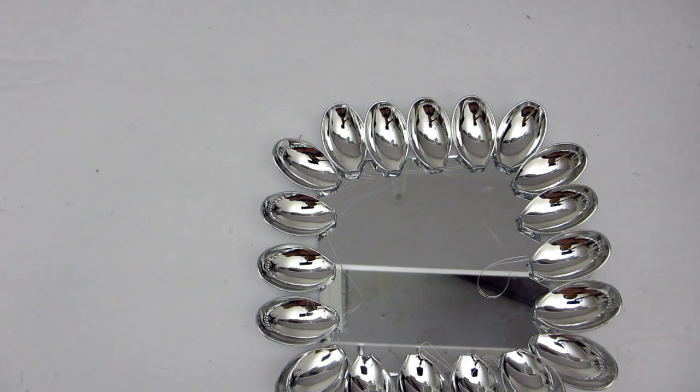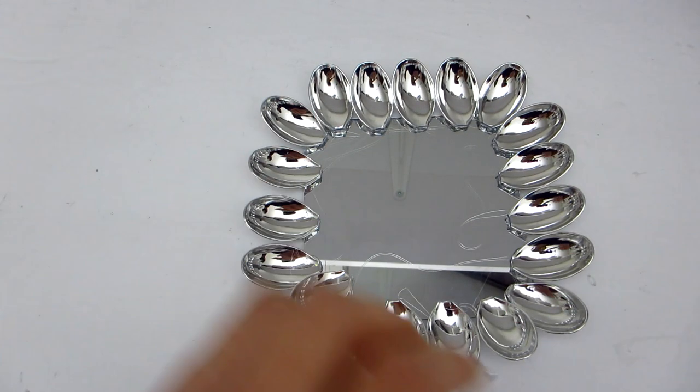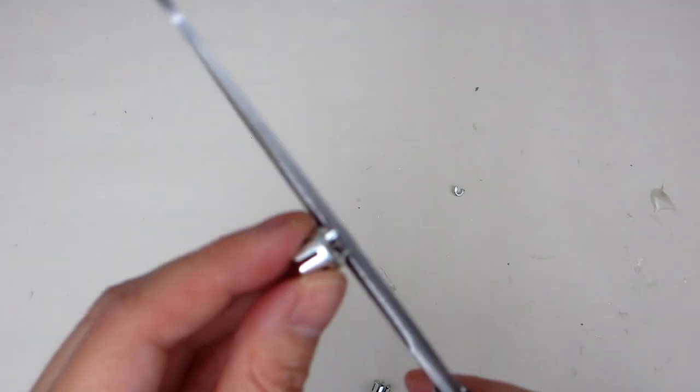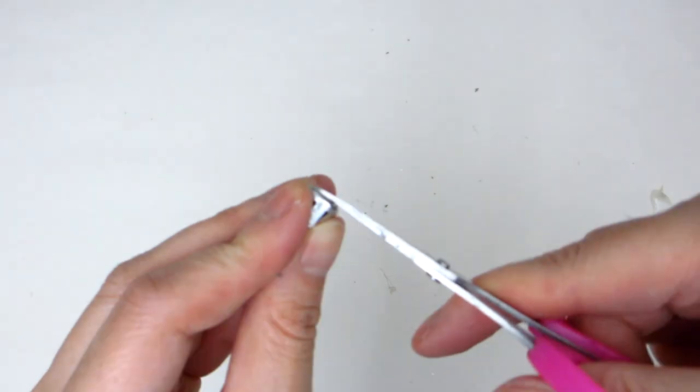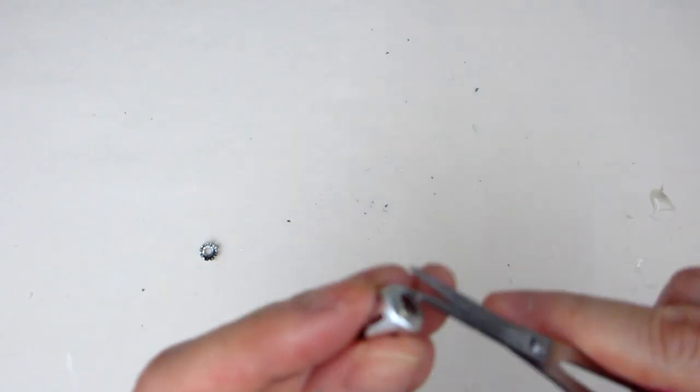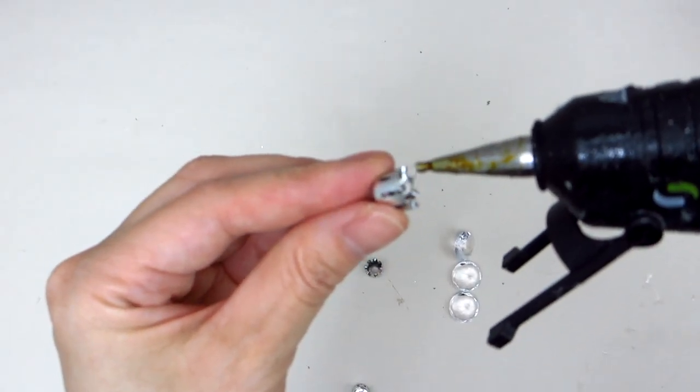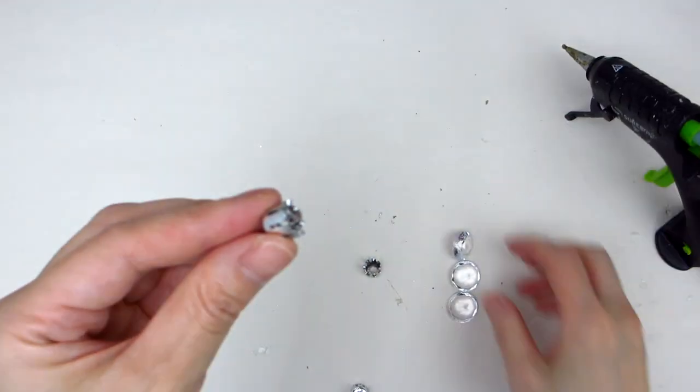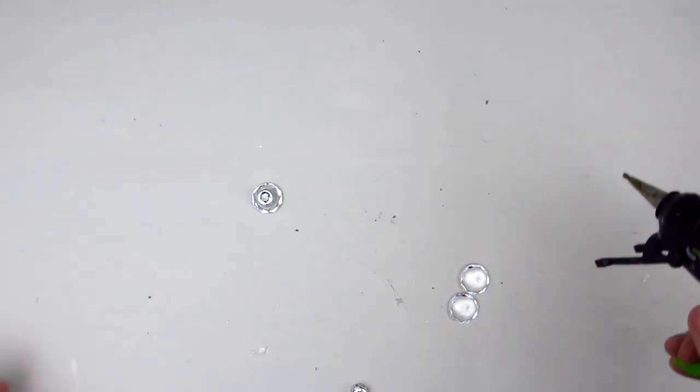Once you have the entire perimeter of the frame covered go back in and apply a second row of spoons. Next we are going to build some legs to adhere to the bottom of the mirror. Take each silver ornament cap and snip off the ends of each until the bottom is flat. Then apply some hot glue inside the opening and insert the pointy end of one diamond shaped acrylic gem inside the opening. Repeat until all four are done.